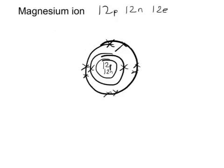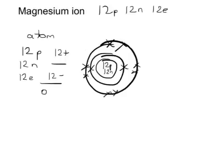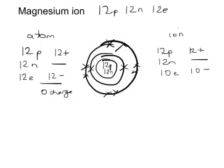Having lost those 2 outer electrons, it now has a full outer shell. Whereas before, as an atom, it had 12 protons (12 pluses), 12 neutrons (no charge), and 12 electrons (12 minuses), giving zero charge overall. Now, as an ion, it's got 12 protons (12 plus charges), still 12 neutrons — the nucleus isn't affected — but it's now only got 10 electrons, so only 10 minus charges. Overall, it's got a 2 plus charge.